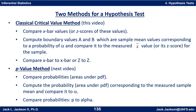In the next video we'll talk about the p-value method, which I think is actually a little better, because it compares probabilities to probabilities — or if you want to think of them as areas under the PDF graph. We compute the probability area under the PDF corresponding to the measured sample mean and compare it to alpha, so we end up comparing a p-value to alpha. We'll elaborate on the classical critical value method in this video.